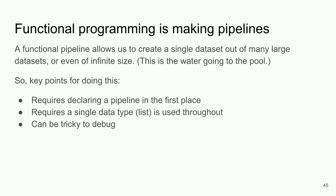Key points about the functional pipeline: this requires declaring a pipeline in the first place, it requires a single data type — a list in this case — used throughout, and it can be tricky to debug, for the same reason it's kind of tough to tell what's going on with water inside a pipe. But functional programming allows us to just define our pipeline and then feed it as much data as quickly as we want.